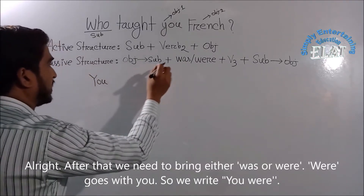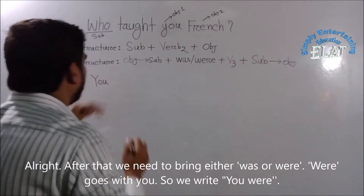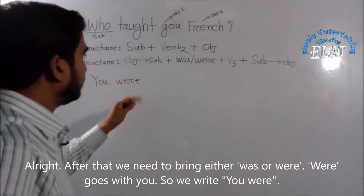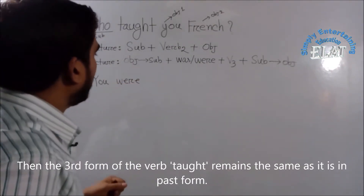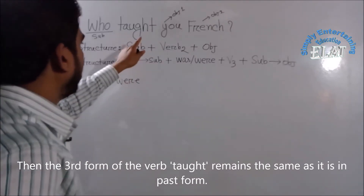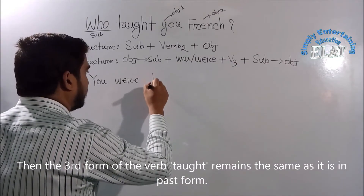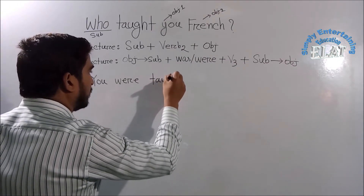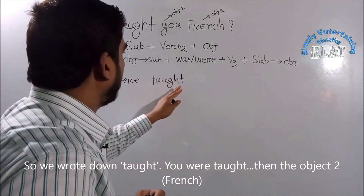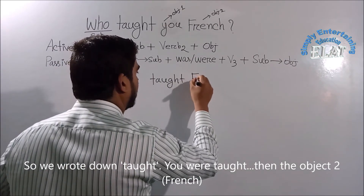First, the object is 'was/were'. We don't have a wire. There is a verb in the third form. The third form is 'taught'. So, we are taught — 'you' taught. Then, the object is 'French'.